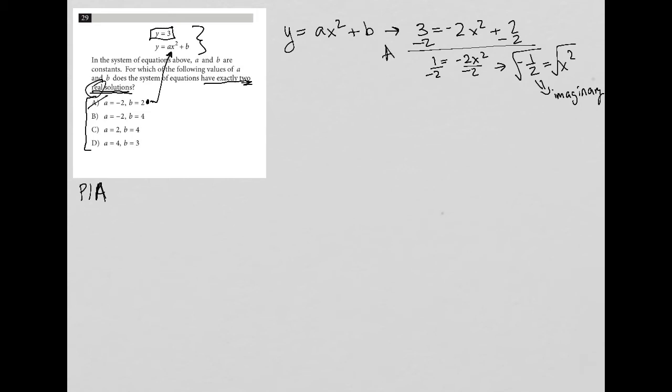Choice B, do the exact same thing. Now I'm going to have 3 equals negative 2X squared plus 4, subtract 4, subtract 4. So I have negative 1 equals negative 2X squared, divide by negative 2, gives me positive 1 half equals X squared. I square root both of these. And when I simplify that, I'll have X equals plus or minus 1 over root 2, which is the same as plus or minus root 2 over 2 if we were to simplify that further. And those are real solutions. So I'm liking B.